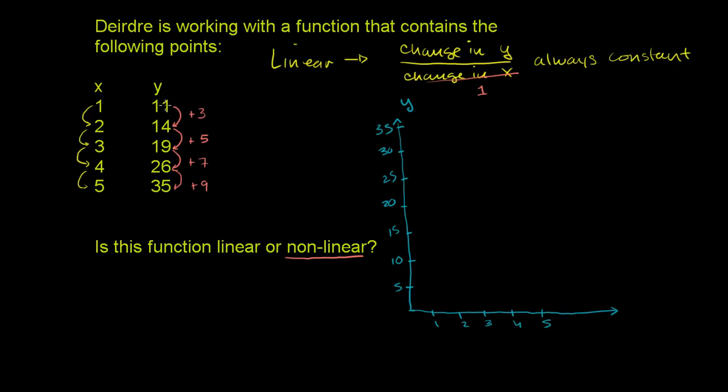So the first point is 1, 11. When x is 1, y is 11. This is our x-axis. When x is 1, y is 11. That's right about there. When x is 2, y is 14. When x is 2, y is 14. That's right about there.